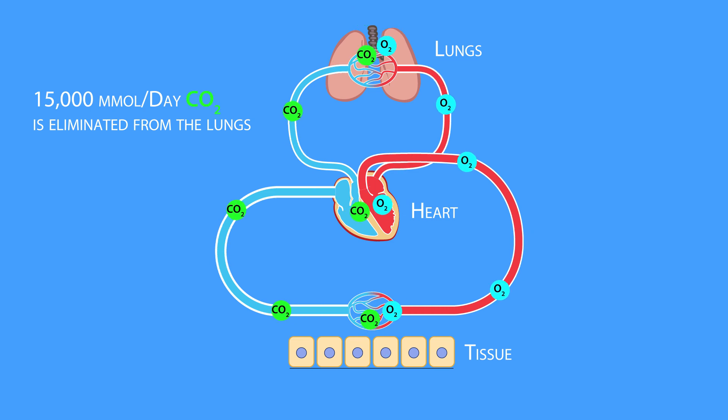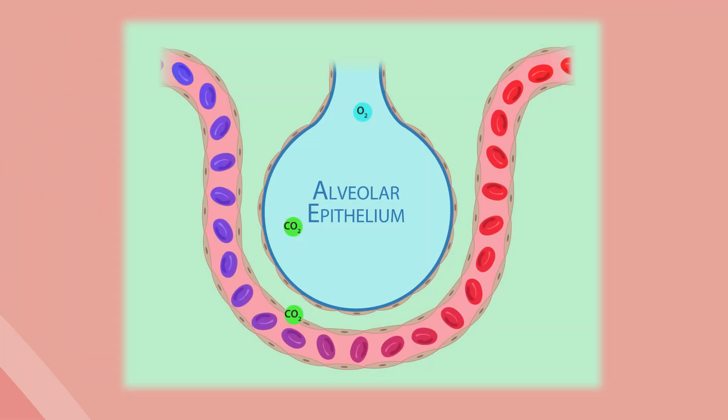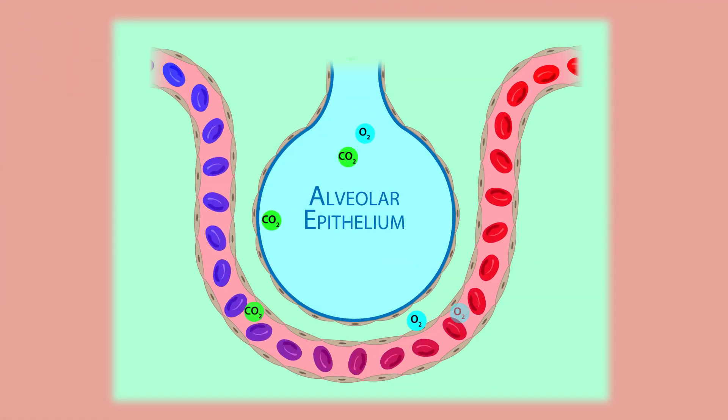In this lesson, we'll discuss how carbon dioxide is transported from the tissues to the lungs. Now, because the transport of carbon dioxide and oxygen are tightly coupled, we'll begin this lesson by explaining how oxygen is taken up by the circulatory system.